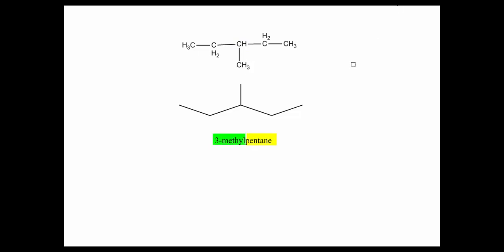Below the Lewis structure is the line-angle diagram, showing five carbons with the methyl group at the three position.